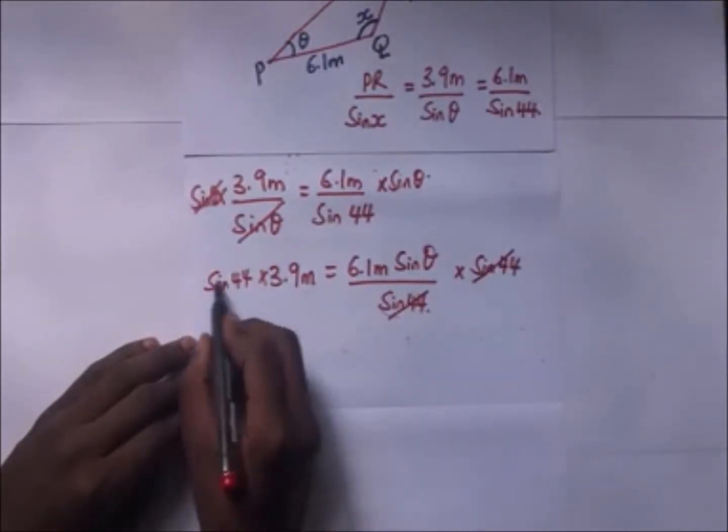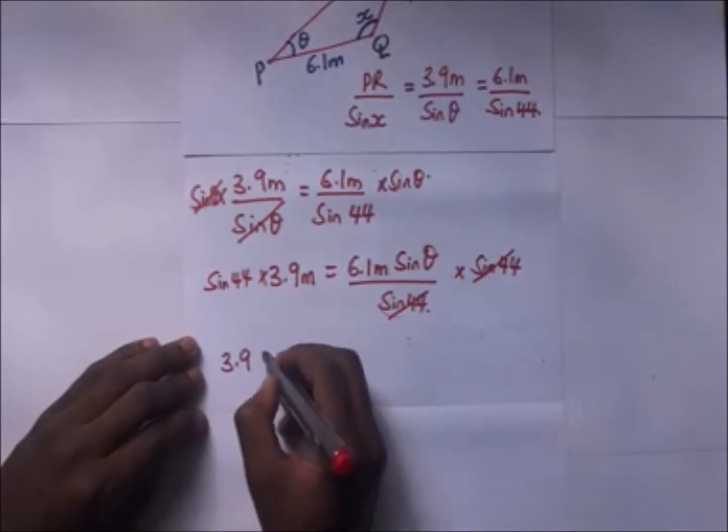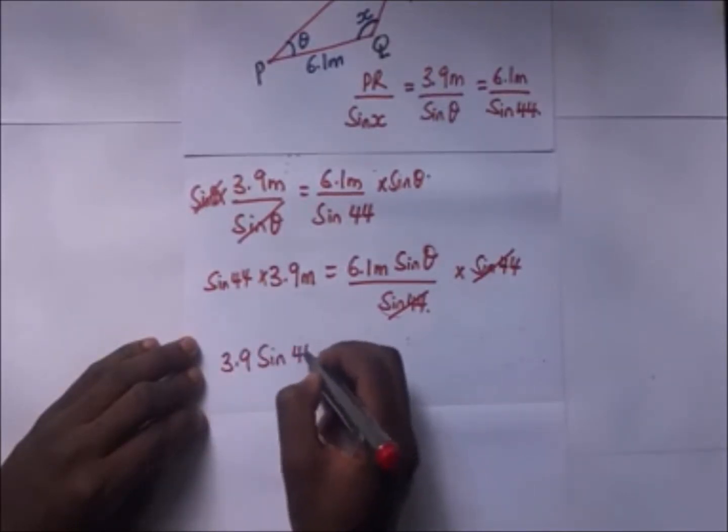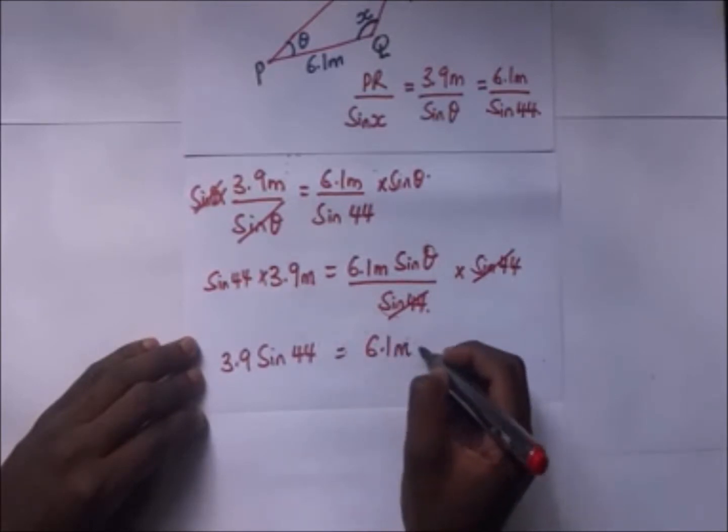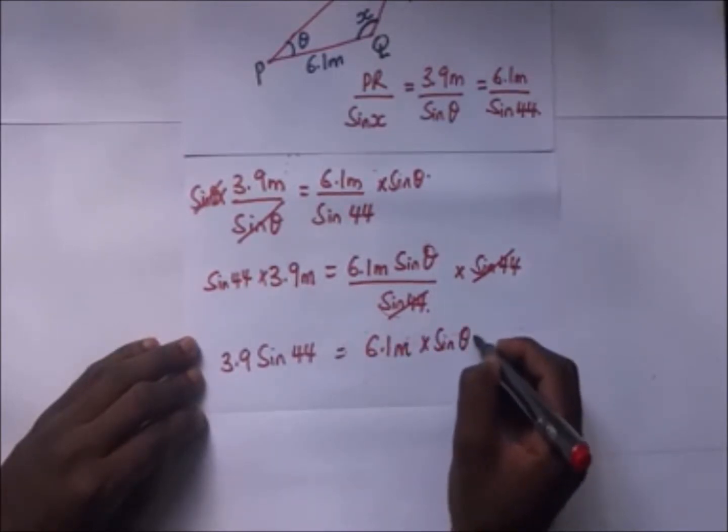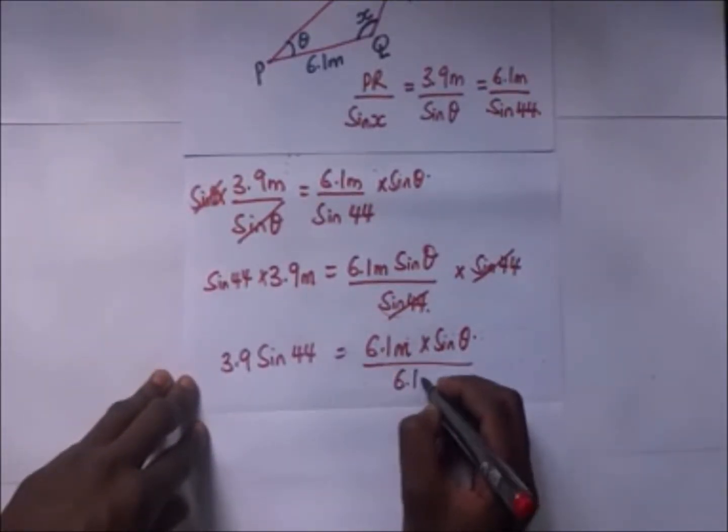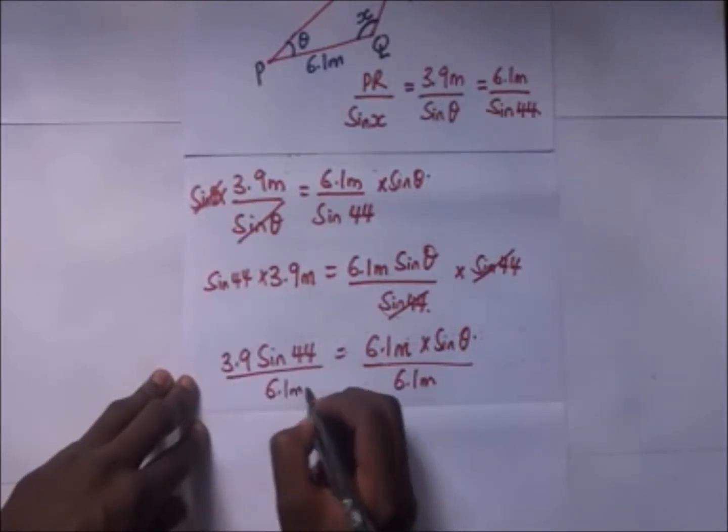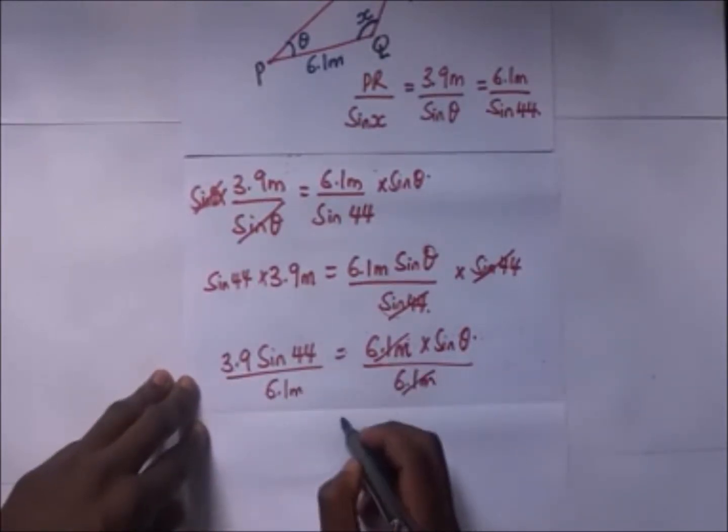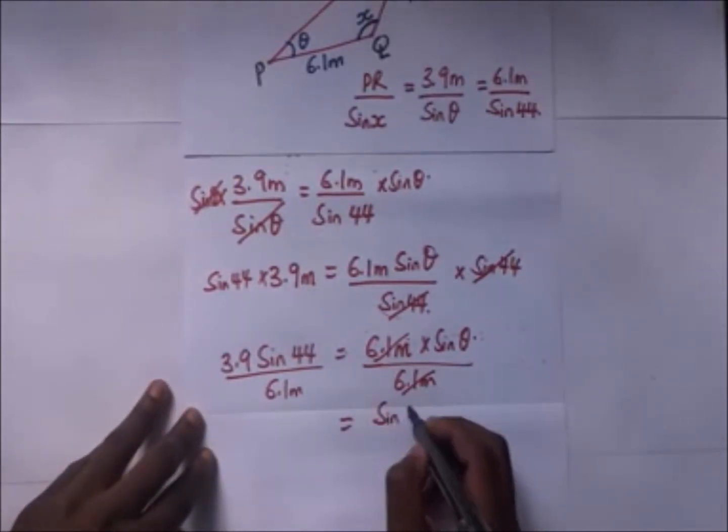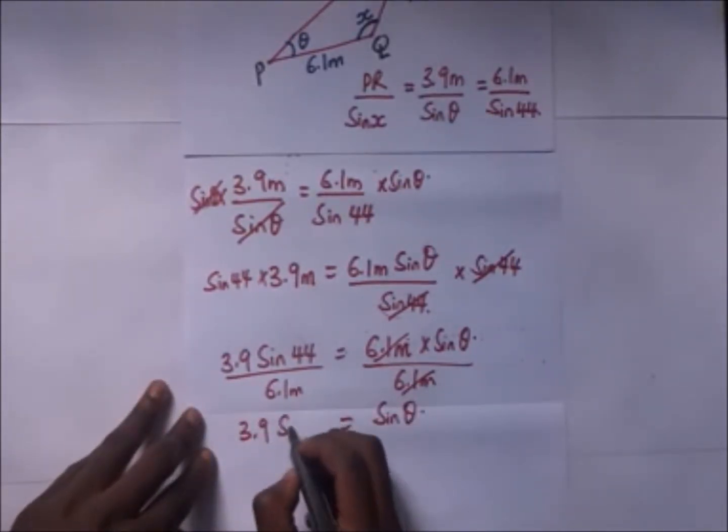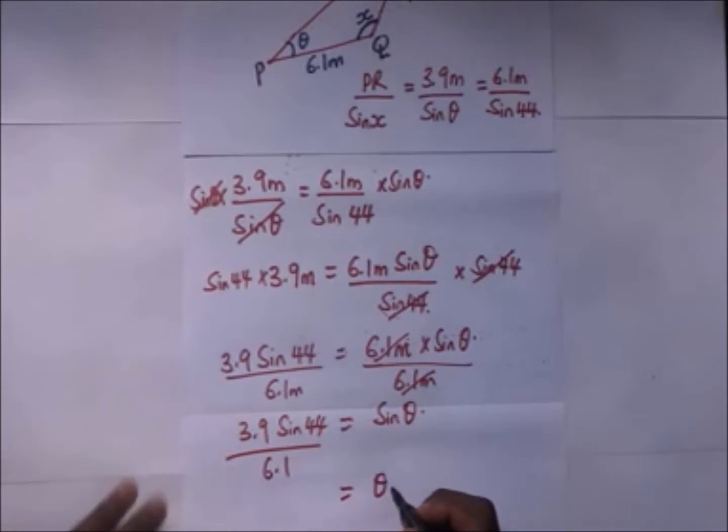So that this goes with that, we remain with 3.9 times the sine of 44 is giving us 6.1 meters times the sine of theta. So to make theta remain here alone we divide both sides by 6.1 meters, so that this cancels with that. We shall remain with sine theta as 3.9 sine of 44 over 6.1. So we remain with our value of theta there as 26.4 degrees.